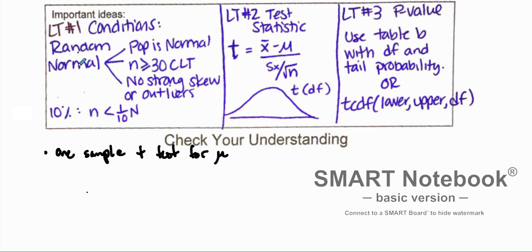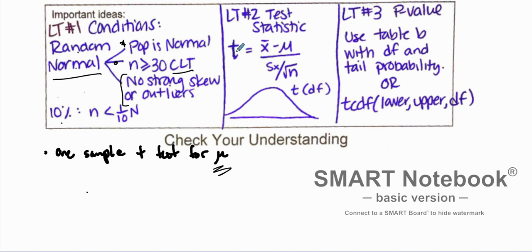You want to test your conditions: is it random, is it normal, is it 10%? Remember that normal, when you talk about means, changes a little bit. Is the population stated to be normal? You're then going to use the central limit theorem — is your n value greater than or equal to 30? If you don't have either of these, look at the sample distribution: are there no strong skews or outliers in your data?